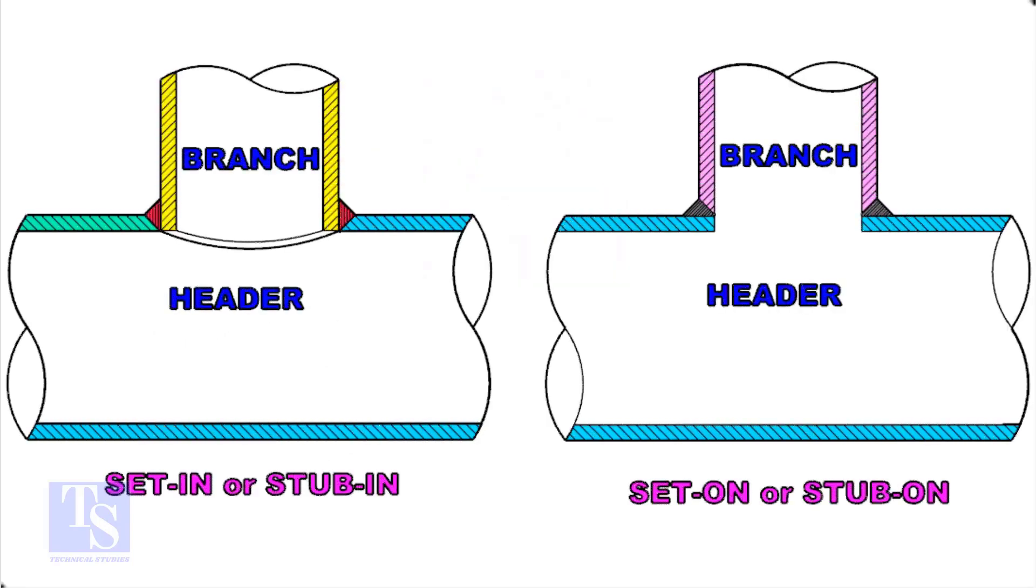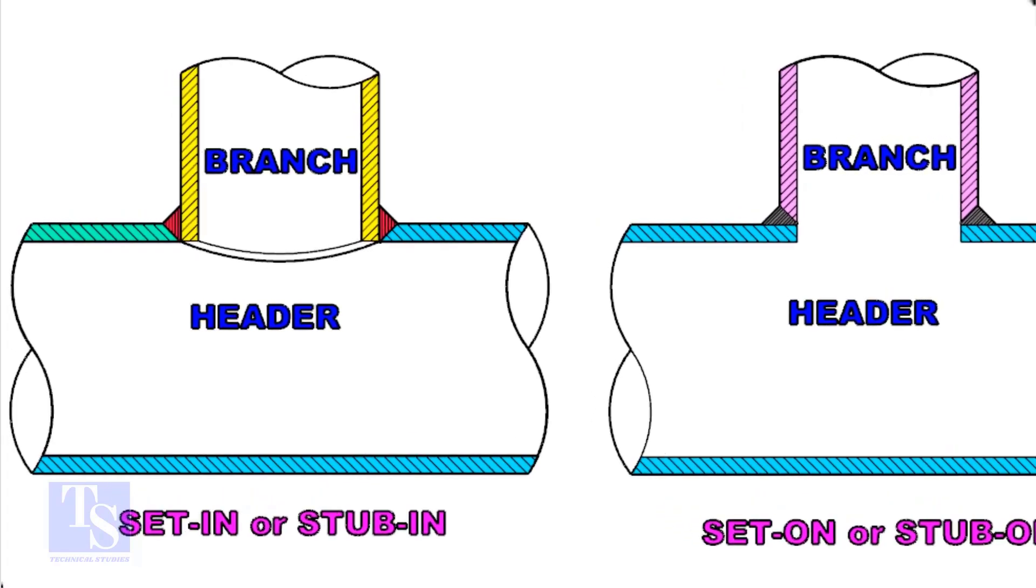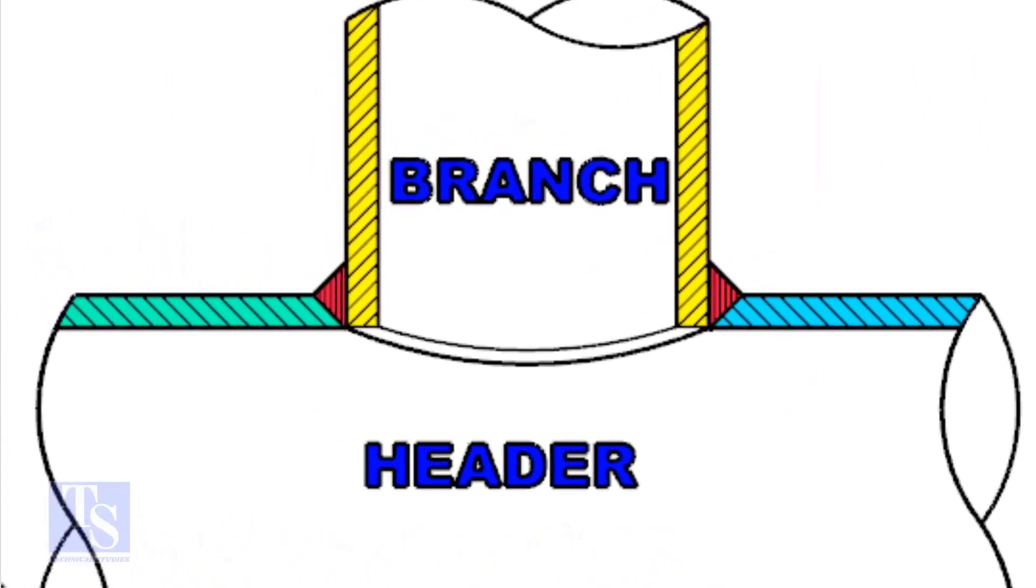Let us check the difference between a stub-in and stub-on connection. Look at the stub-in joint, the bevel is prepared on the header. And the branch pipe is in the header.